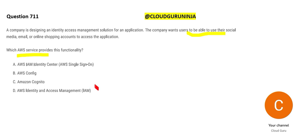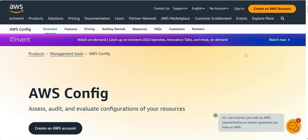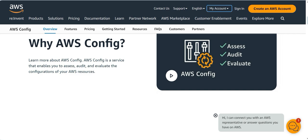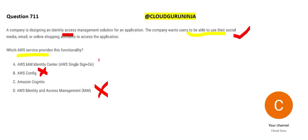A lot of people get tempted and think it's talking about access management, so they blindly put IAM — but IAM will not help you fulfill this requirement. AWS Config will also not work here because Config is about configuration tracking: for example, an EC2 instance was configured two months back, somebody made a change, and you want to know who made the change. That is the purpose of Config.